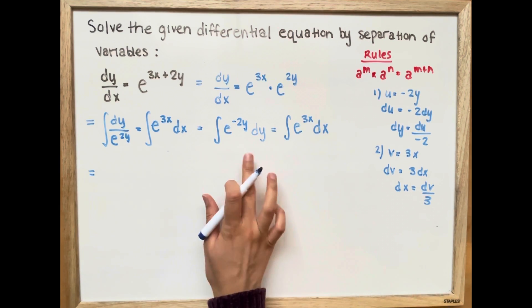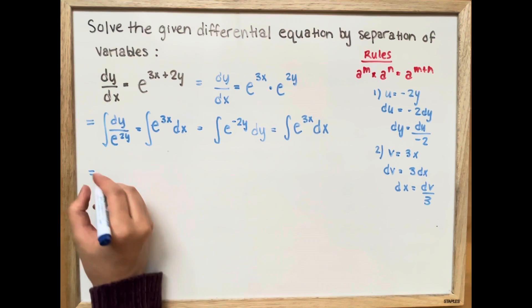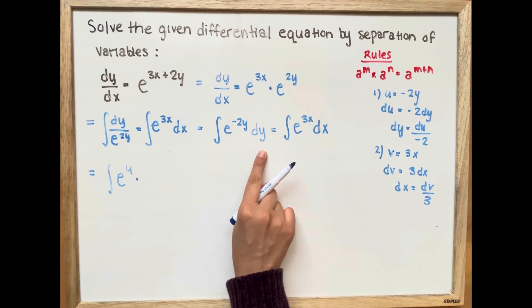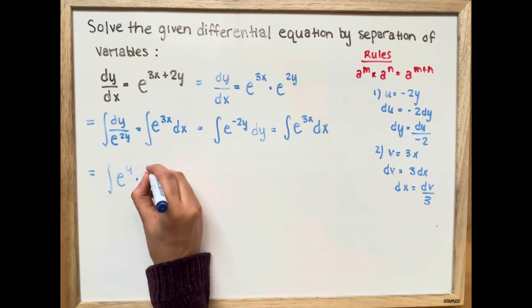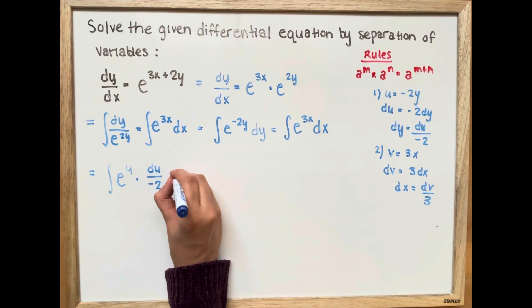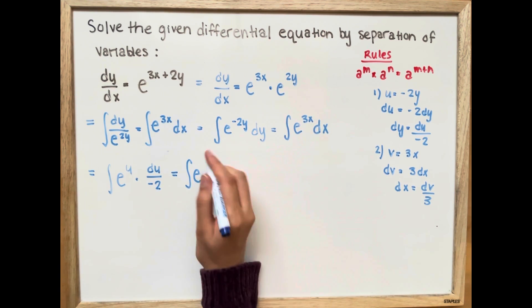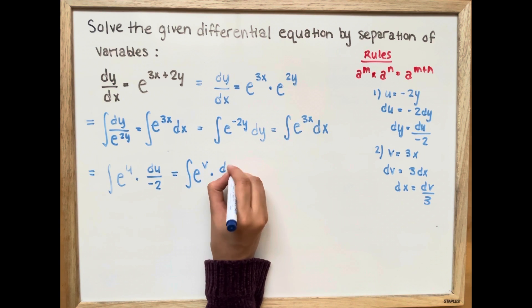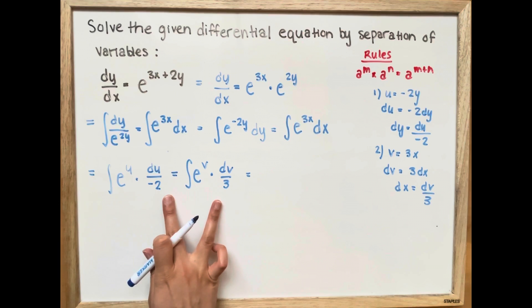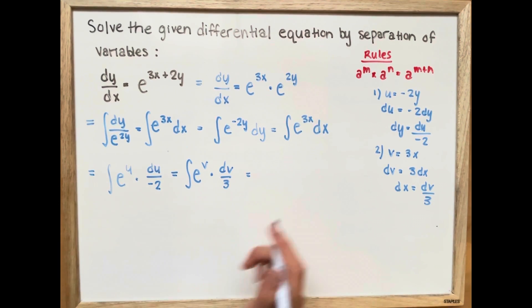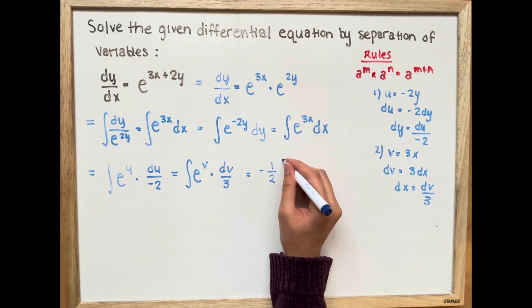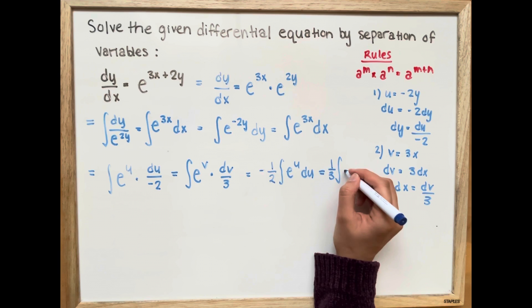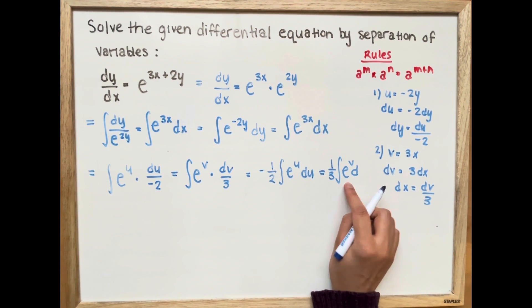Now we're going to rewrite this in terms of the variables we have chosen. The integral of e to the power of u multiplied by dy equals du over negative 2, which equals e to the power of v multiplied by dv over 3. Next, we're going to take out both constants, since the integral does not affect the constant. So we have negative 1 over 2 times the integral of e to the u du, which equals 1 third times the integral of e to the v dv.